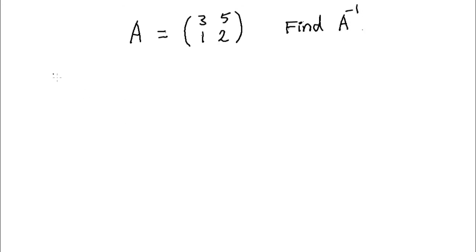find DET. AD minus BC is 3 times 2 minus 1 times 5, which equals to 1.